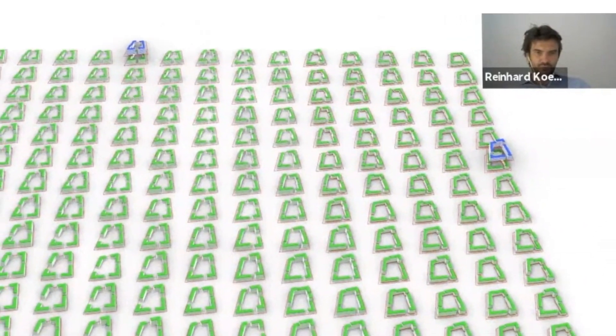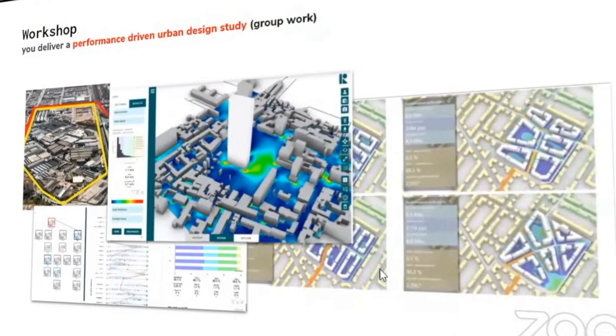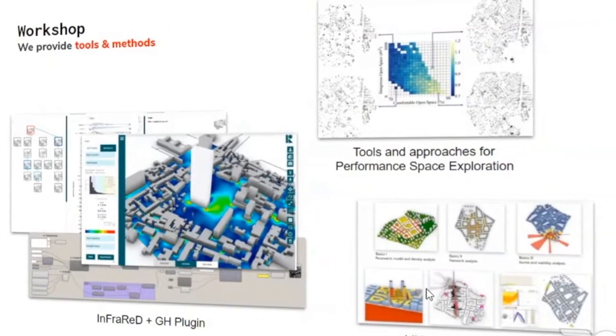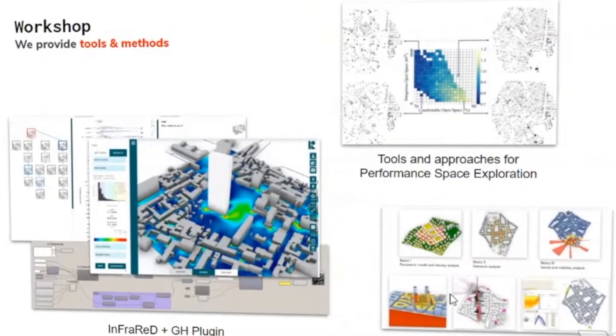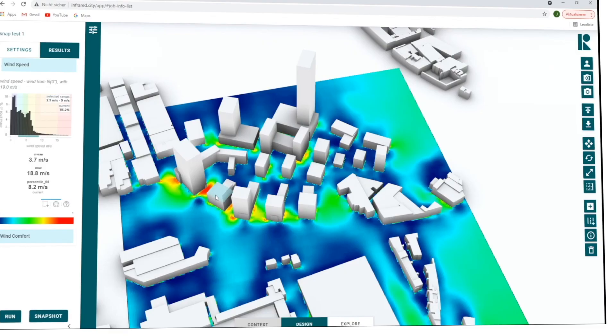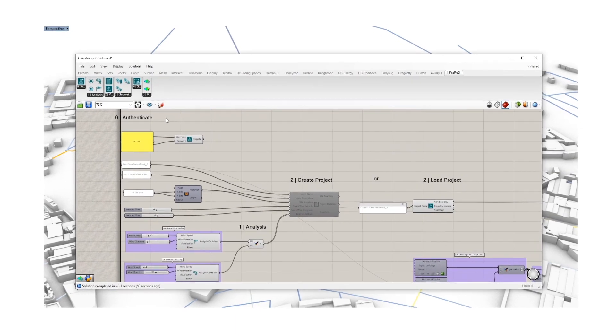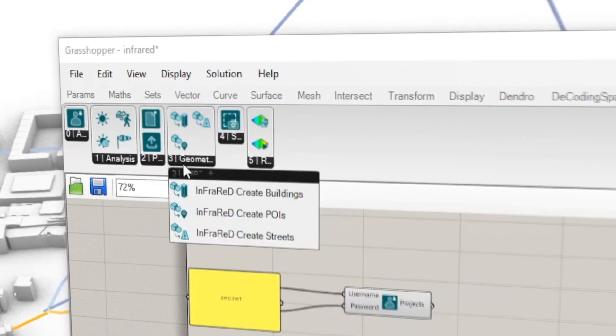We kicked off the workshop with a lecture by Reinhard Koenig introducing cognitive urban design computing. Then Angelus Kronus gave an introduction to the lab, and we provided a site in Barcelona, asking students to come up with a performance-driven approach for an urban design project using tools shown throughout the next four days. We started with Infrared as a web platform, where people can directly design buildings and get performance feedback.